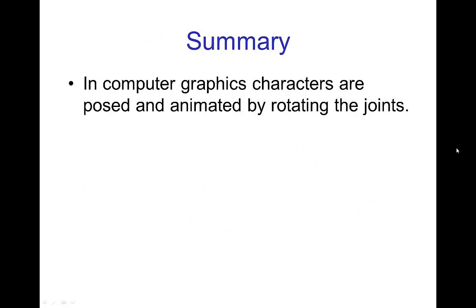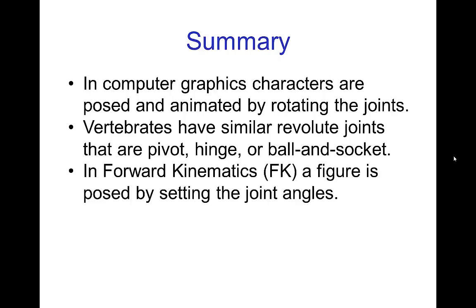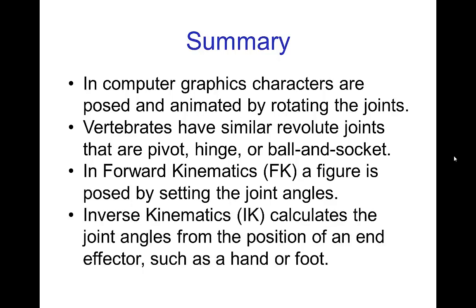In summary, in computer graphics, characters are posed and animated by rotating the joints. Vertebrates have similar revolute joints that are either pivot joints, hinge joints, or ball and socket joints. In forward kinematics, a figure is posed by setting the joint angles, whereas with inverse kinematics, the computer calculates the joint angles based on the position of an end effector such as the hand or foot. The animator controls the positioning of the end effector, and the joint angles are determined from a computer calculation.